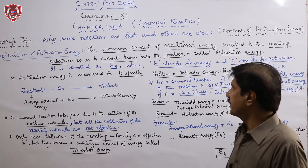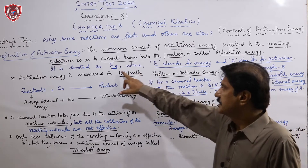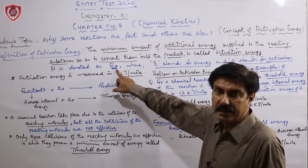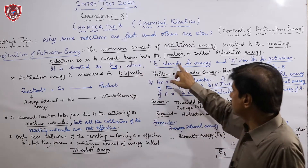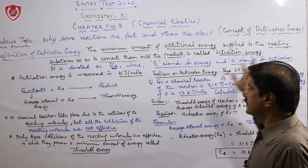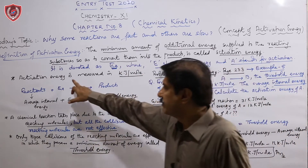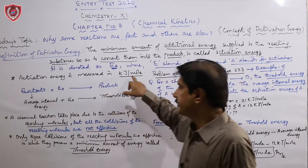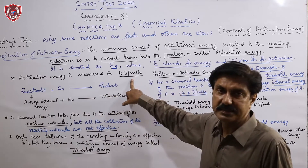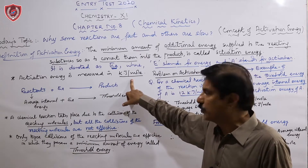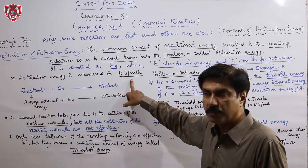This energy is called activation energy, or energy of activation, symbolized by Ea — where E stands for energy and A stands for activation. The measuring unit of activation energy is kilojoules per mole (kJ/mol).